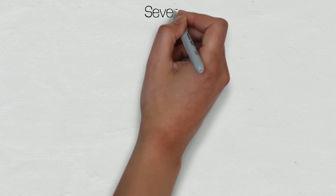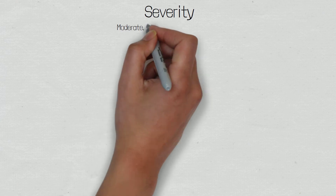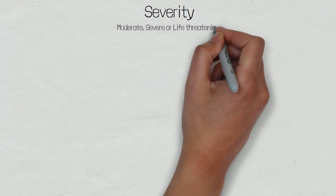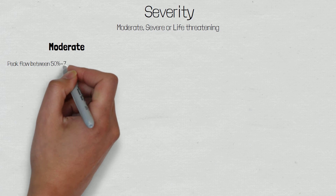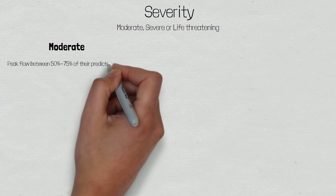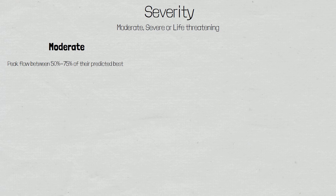The severity of an acute asthma attack can be graded based on the patient's signs and symptoms, and will help in guiding management. Acute asthma attacks can be categorised as moderate, severe, and life-threatening. Patients experiencing a moderate asthma attack will have a peak flow reading between 50 and 75% of their predicted best, or 50-75% of what is normal for them, with associated signs and symptoms such as shortness of breath and a wheeze on auscultation.